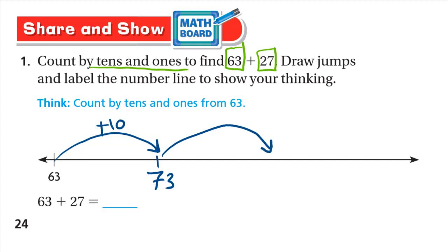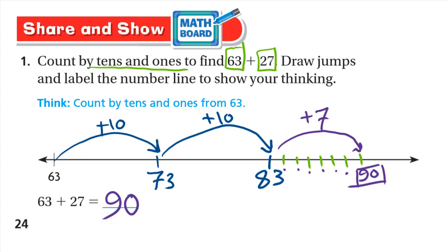It becomes 83. And we need to add 7 more. So let's count 1, 2, 3, 4, 5, 6, 7. Let's see what number will we have. After 83, 84, 85, 86, 87, 88, 89, 90. So our answer is 90. We added 10. It becomes 73. We added one more 10. It becomes 83. We added 7. And then it becomes 90.